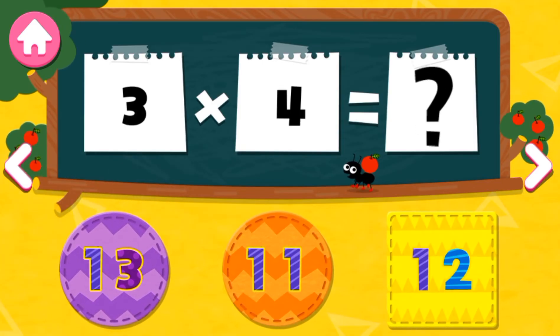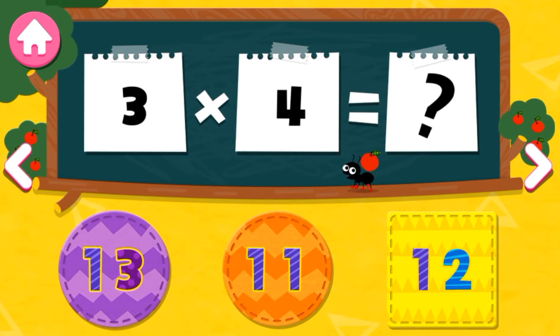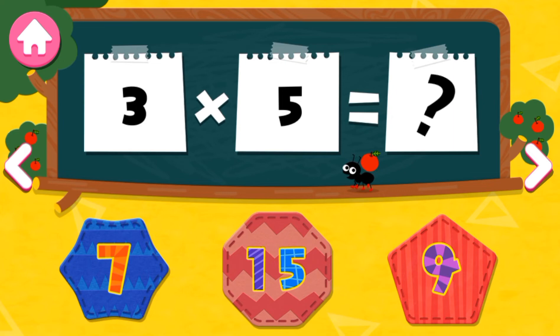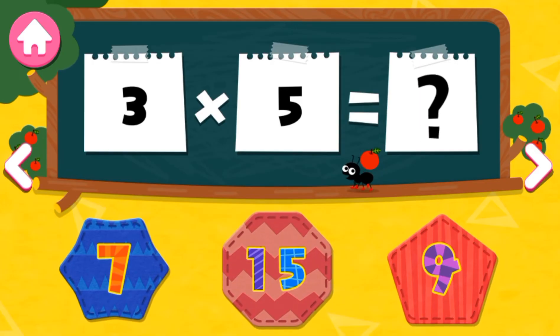3 times 4 is... 12. 3 times 5 is... 15. Yay!